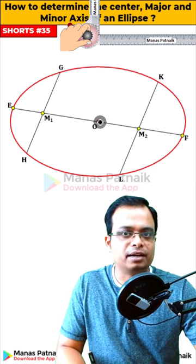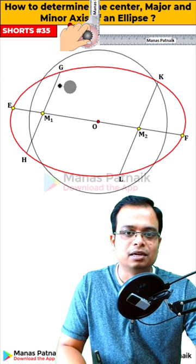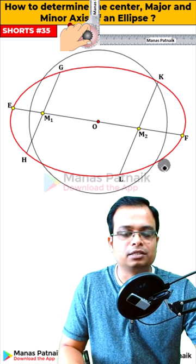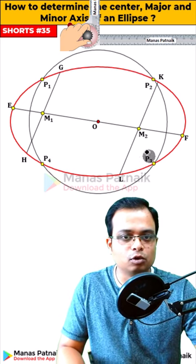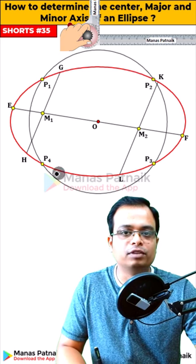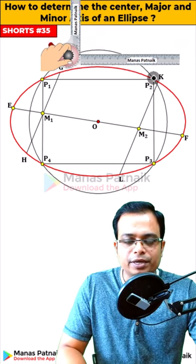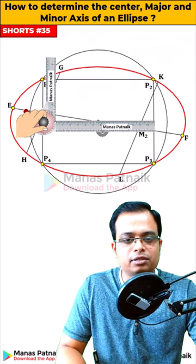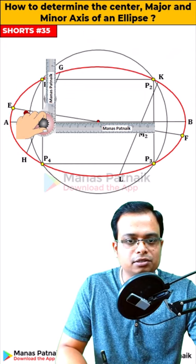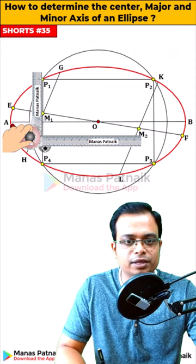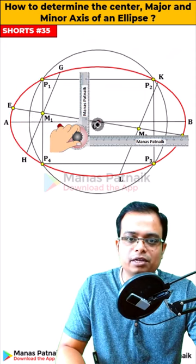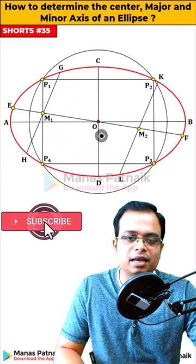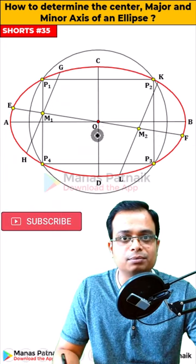Now with O as center and with a radius slightly more than half the minor axis, make this circle — it is intersecting the ellipse at four points: P1, P2, P3, P4. Join all of them through lines. Keep your drafter over here, tighten the screw, bring it to the center — that's the major axis. Keep your drafter over here, tighten the screw, bring it to this center point — that's the minor axis. Very simple.